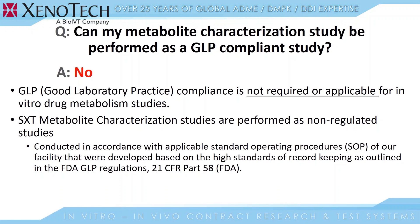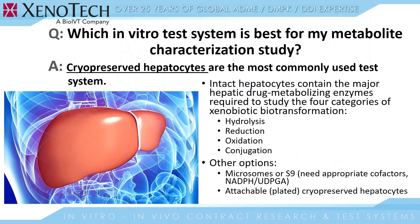Which in vitro test system is best for my metabolite characterization study? Cryopreserved hepatocytes are the most commonly used test system — kind of the gold standard in terms of having the most intact functional categories of metabolism and biotransformation, which include hydrolysis, reduction, oxidation, and conjugation. Other options are microsomes or S9; those subcellular fractions need appropriate cofactors, and we can design your study as applicable. We can also perform these with plated cryopreserved hepatocytes.